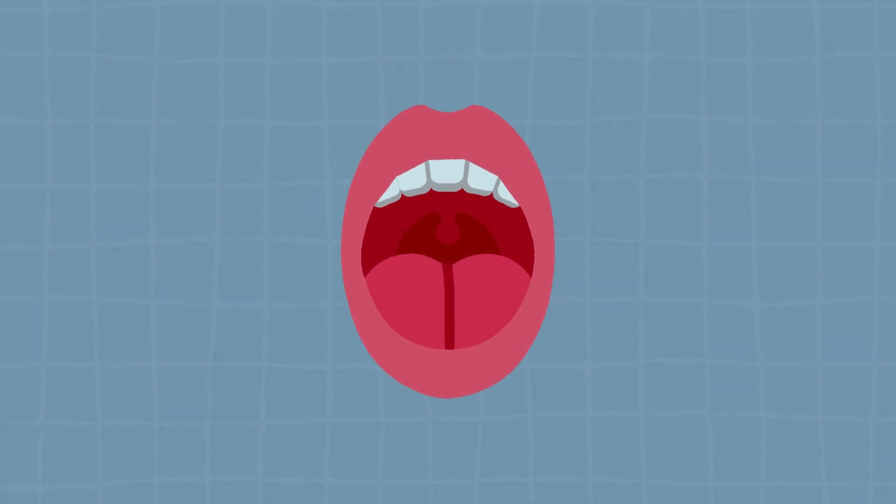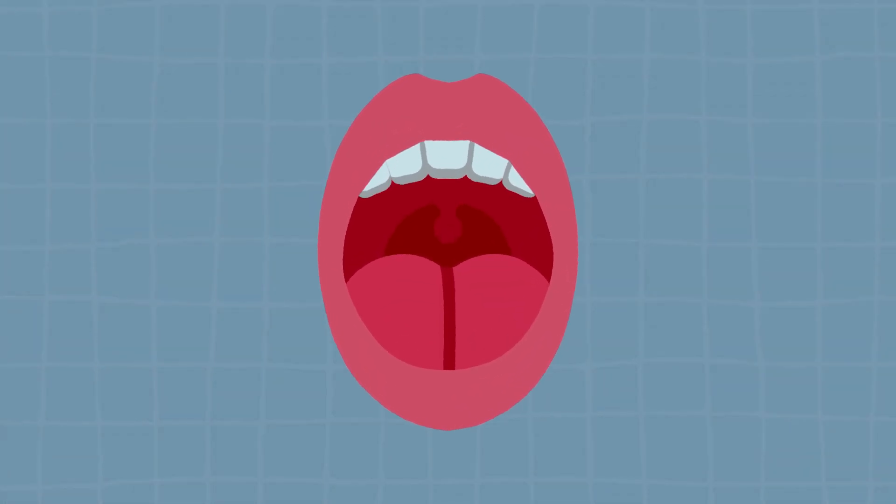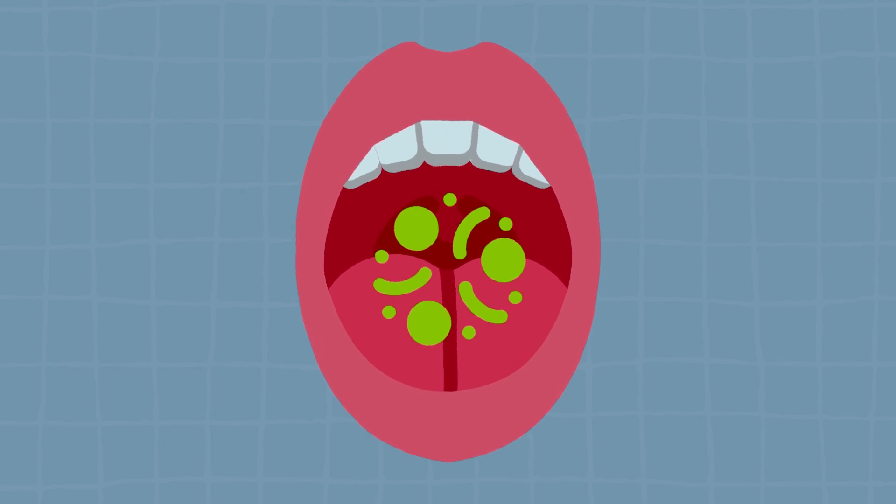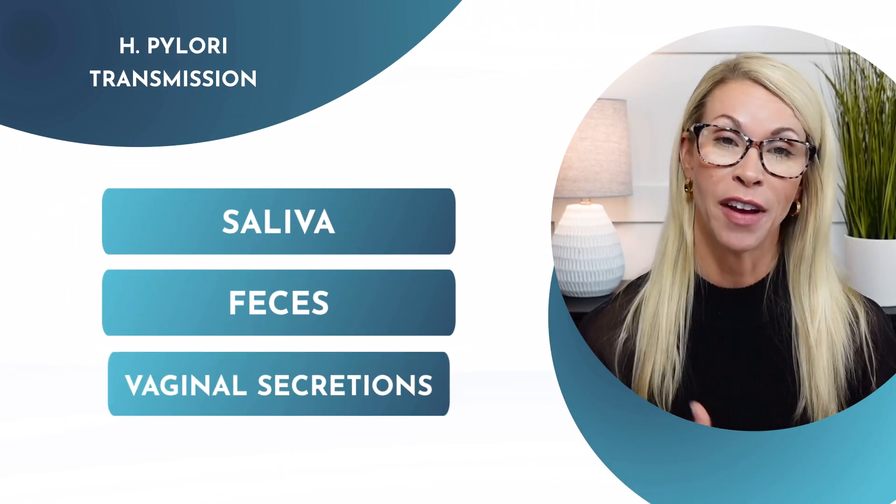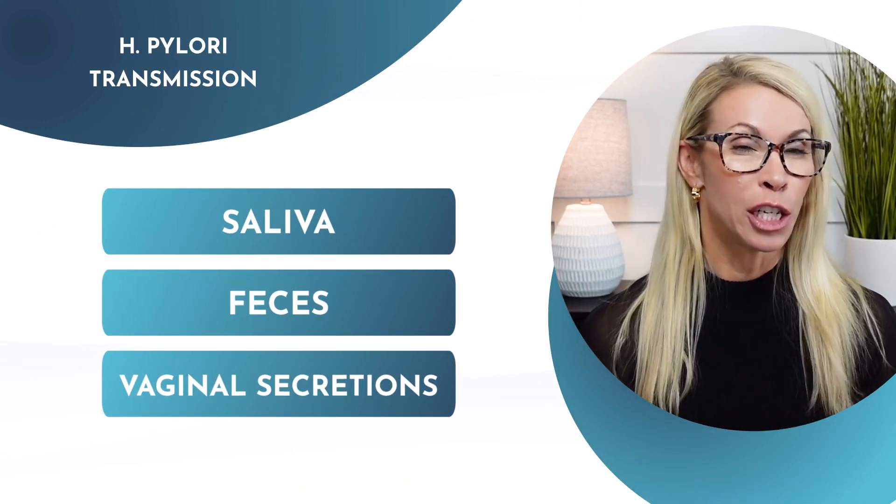A few other things that you'll want to consider if you have H. pylori is making sure that you have good dental hygiene because the mouth can be a reservoir. Now, H. pylori is primarily transmitted through saliva, feces, and vaginal secretions. Consider treating family members as, again, it is highly contagious.